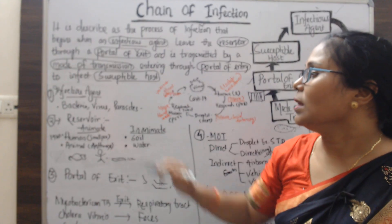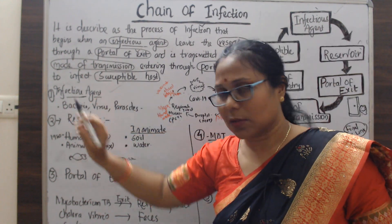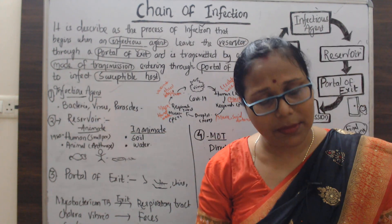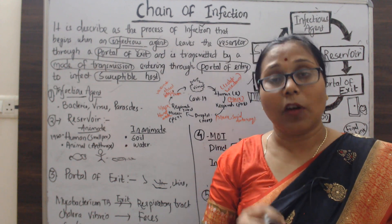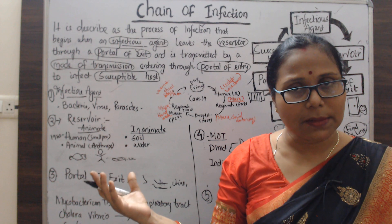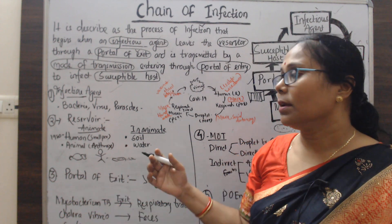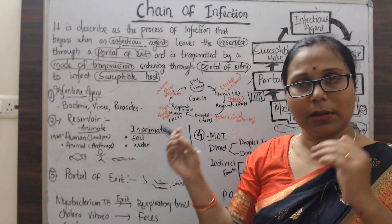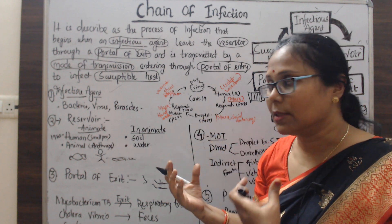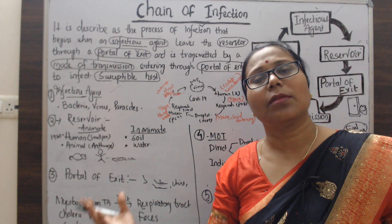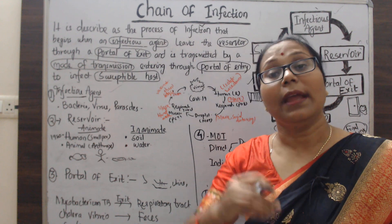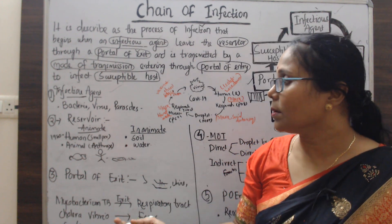Let's see these six components one by one in detail. The first component is the infectious agent — microorganisms such as bacteria, viruses, fungi, and parasites. These are the infective agents that start the infection. The place where they live, grow, and reproduce is called the reservoir.